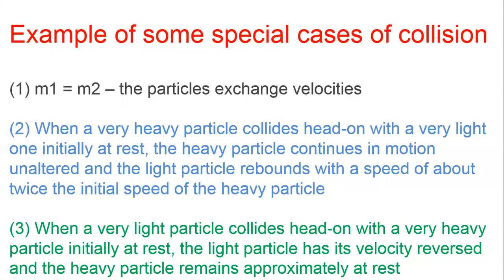Some special cases of collision: first, if m1 = m2 (masses are equal), the particles will exchange their velocities — as we just discussed. Second special case: when a heavy particle collides with a very light one initially at rest, the heavy particle continues in motion with approximately unchanged velocity, and the light particle moves forward rapidly.